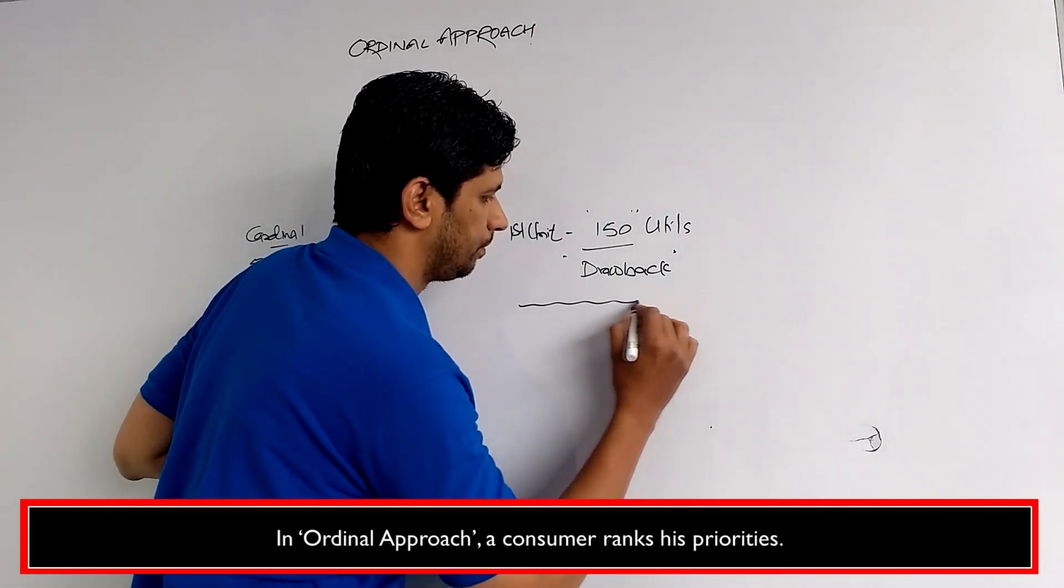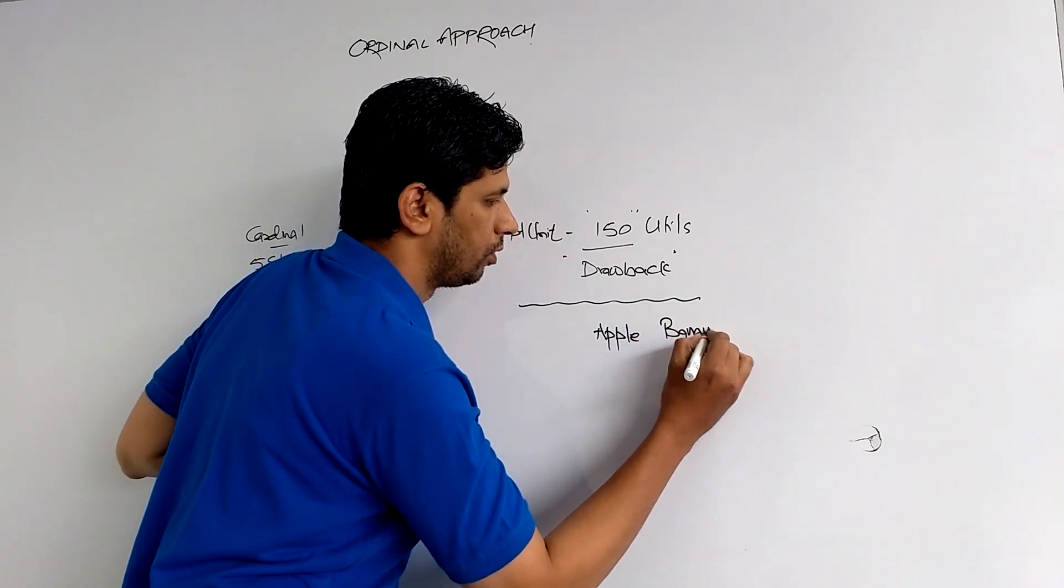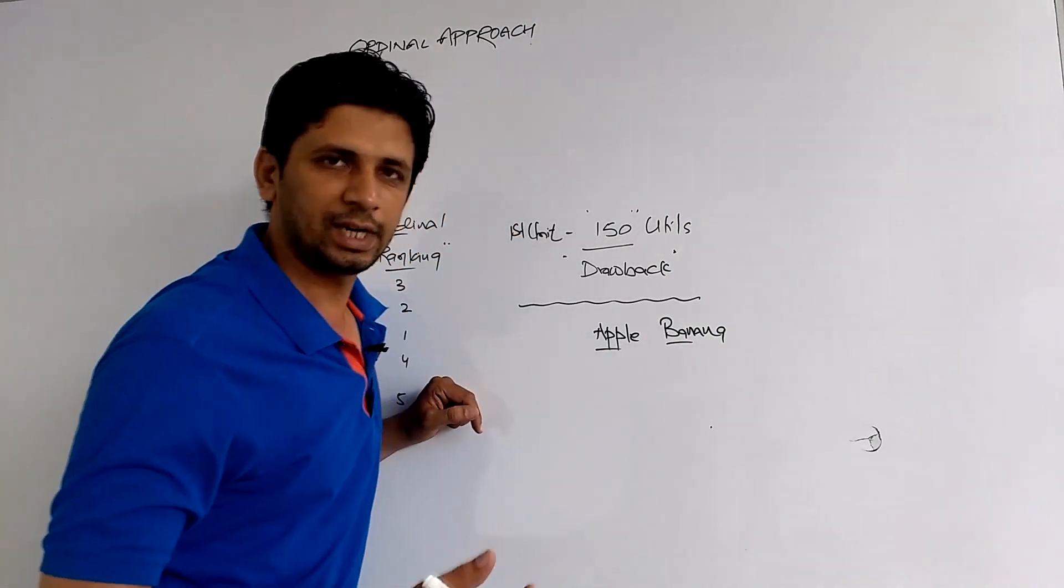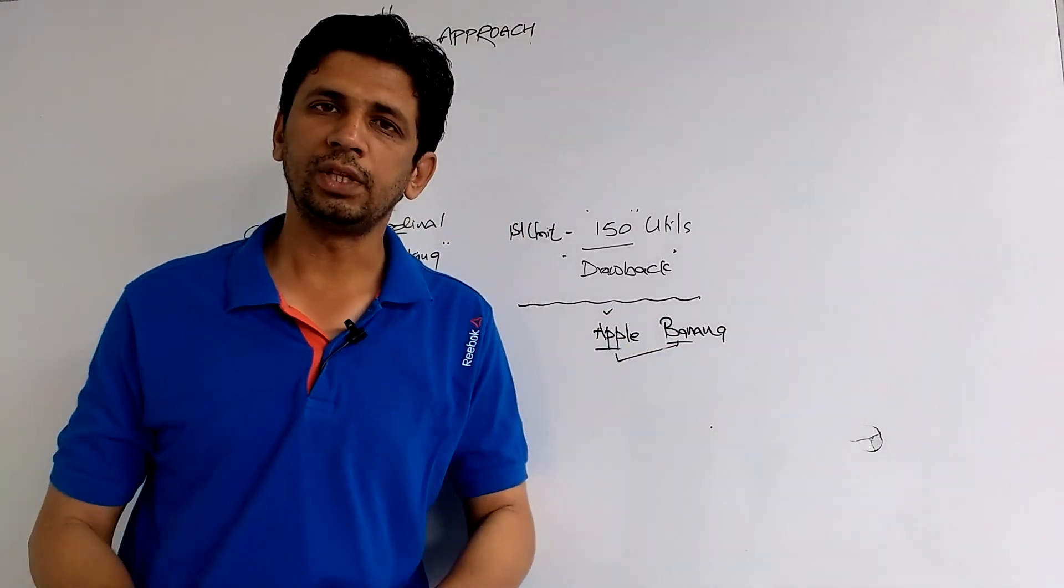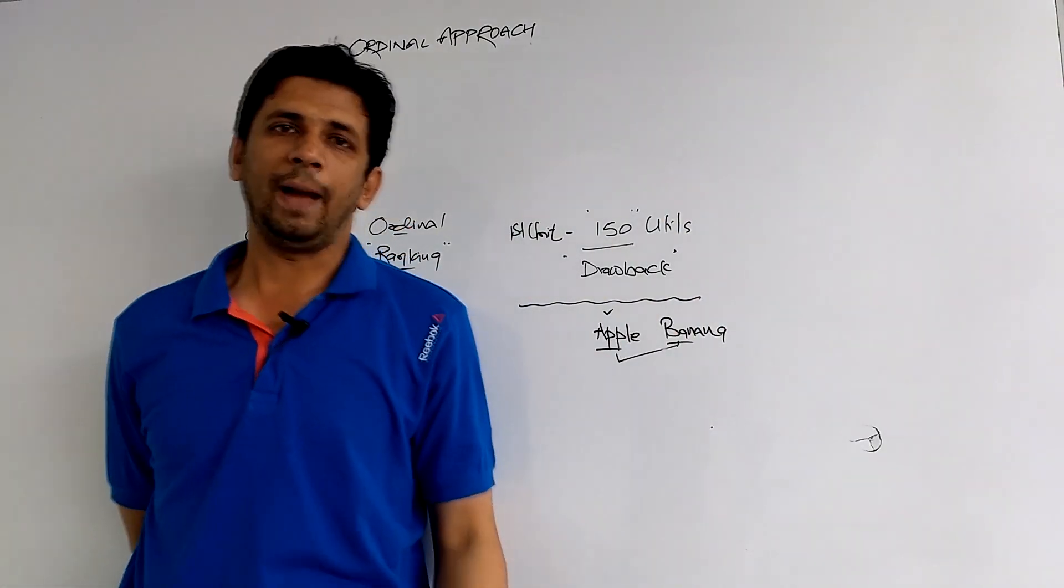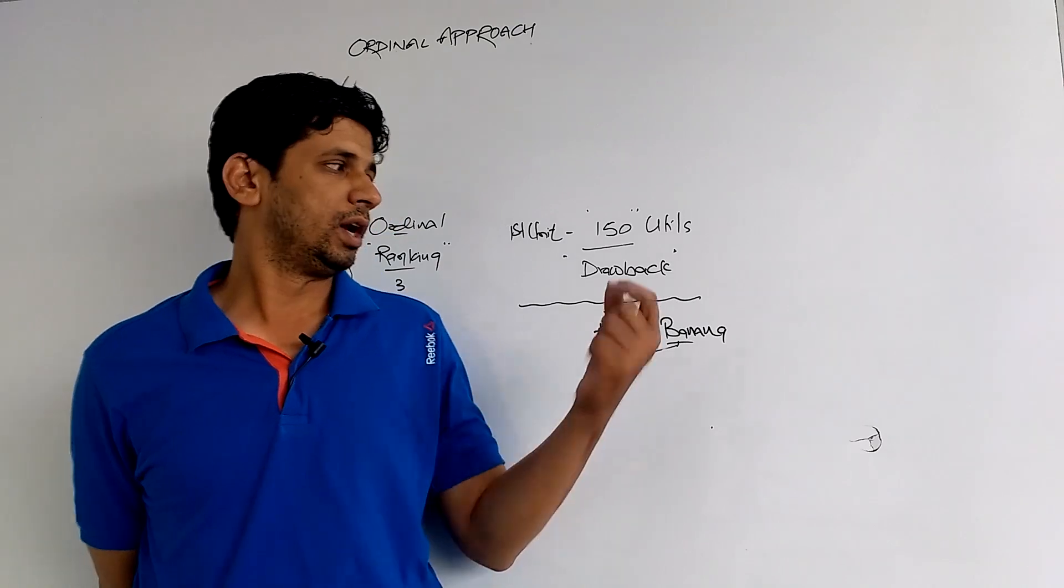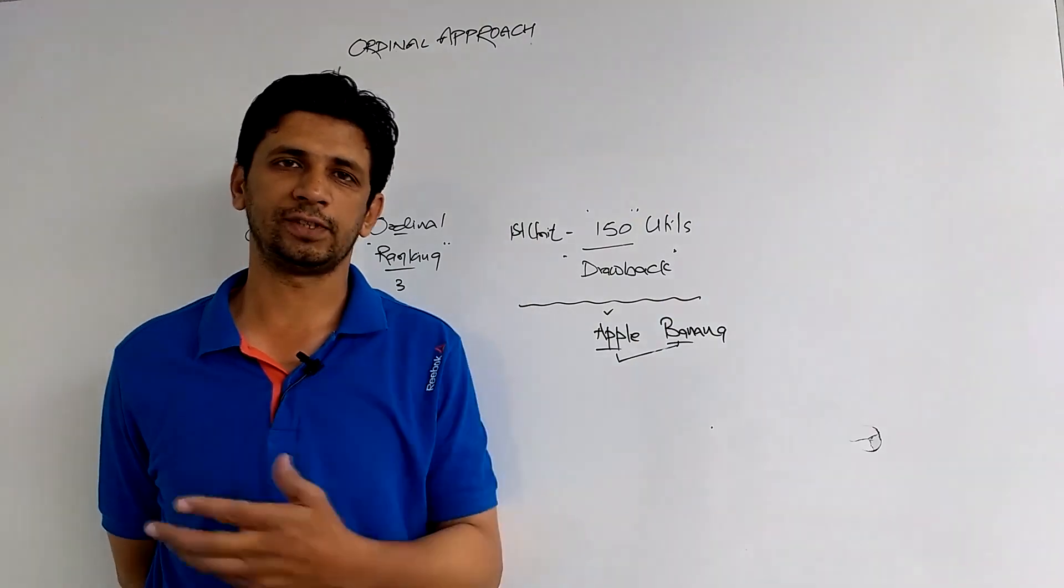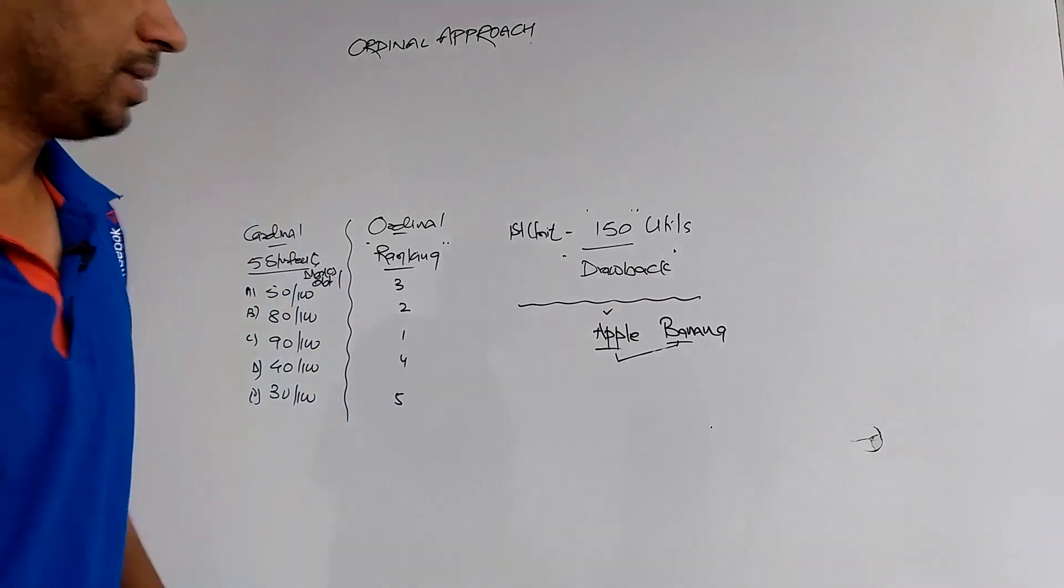So a person has commodities - apple and banana. If you tell him what should you take, then he can set his priorities, that he will prefer apple over banana. So if he prefers apple to banana, it means he is getting more satisfaction from the apple as compared to the banana. Now if he is taking apple, we are not asking him how much satisfaction you are getting from apple.